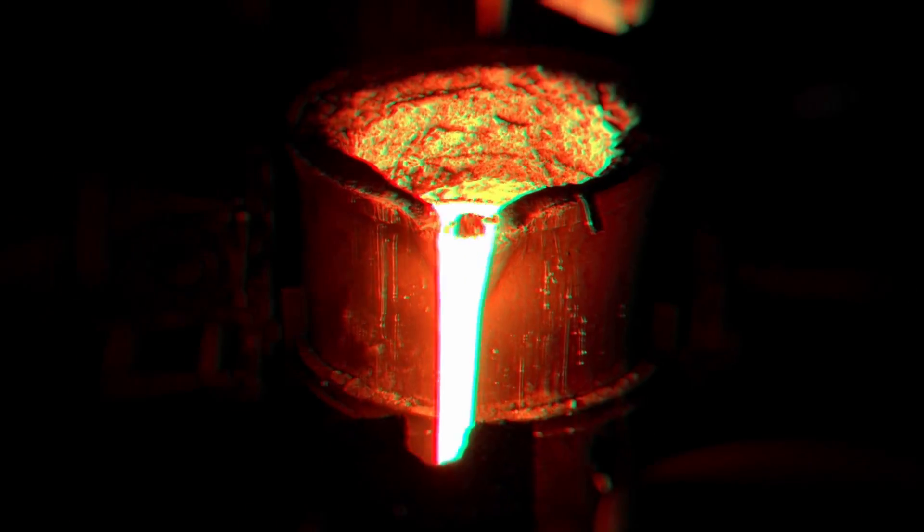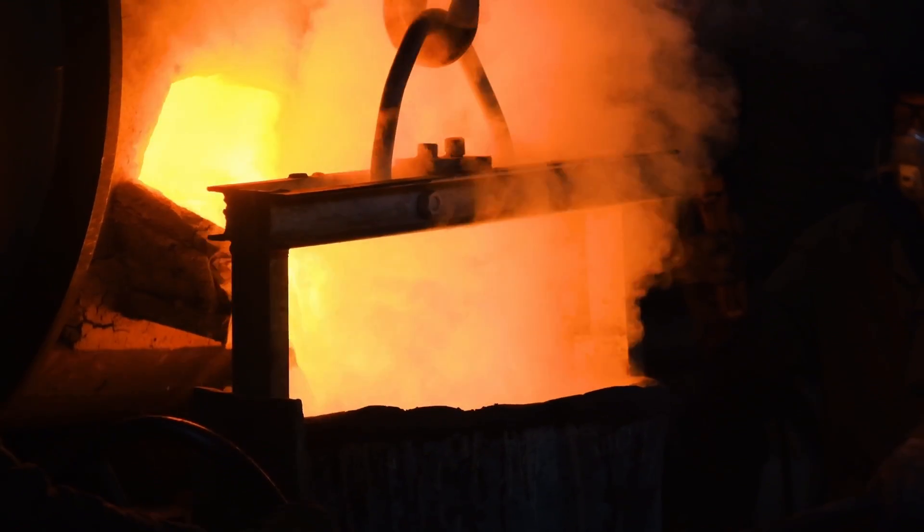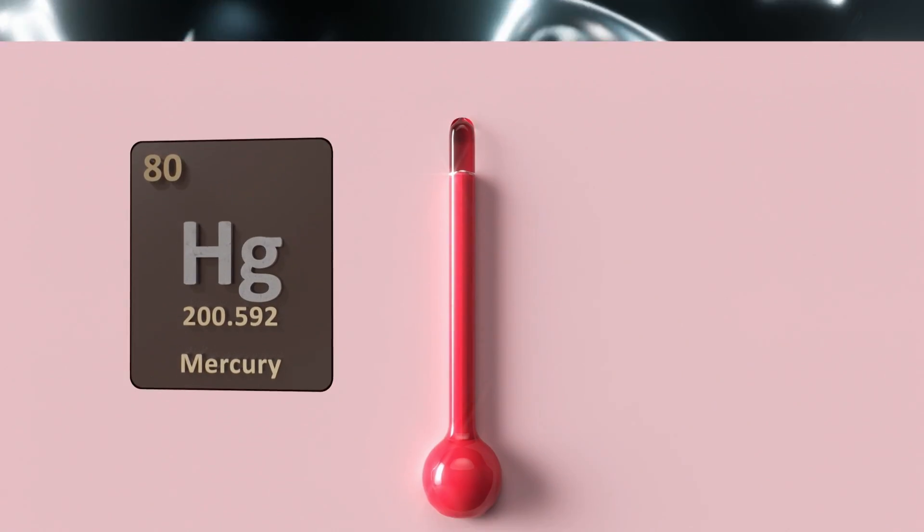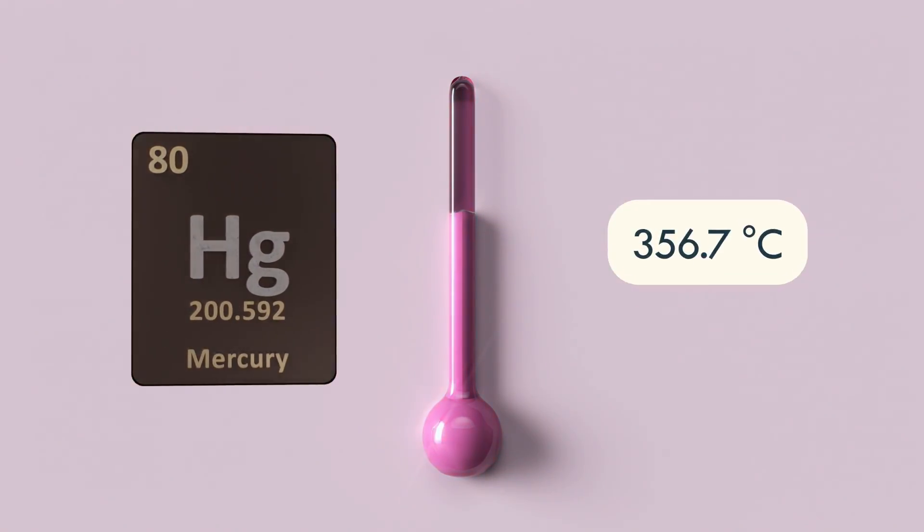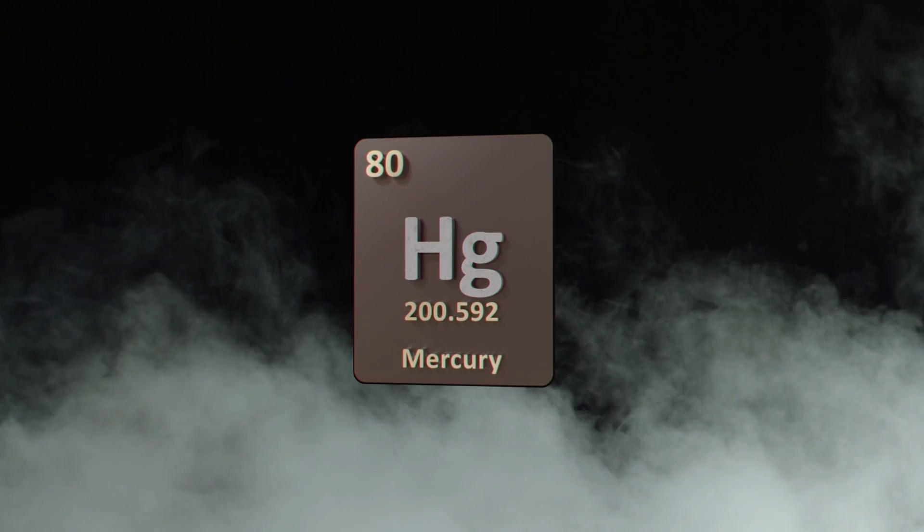When heated further, the liquid vaporizes into a gas at its boiling point. Mercury offers another fascinating example with the lowest boiling point of all metals at near 356.7 degrees Celsius. Mercury transitions from its liquid state to a gaseous one at a relatively low temperature.